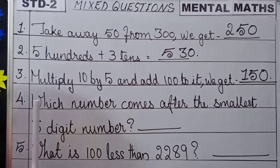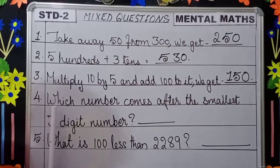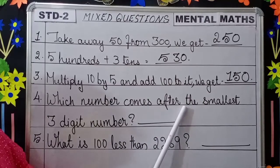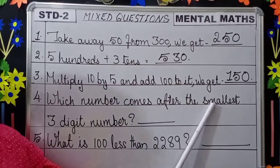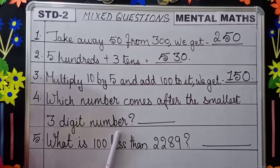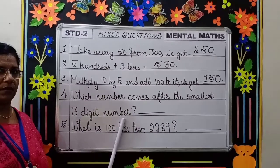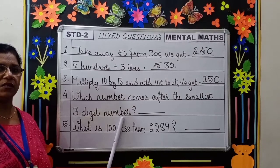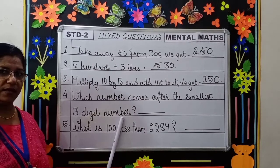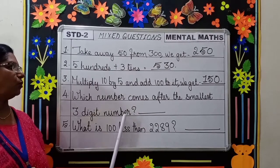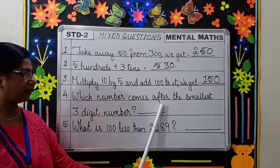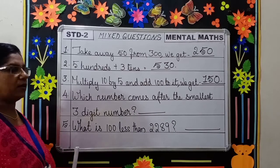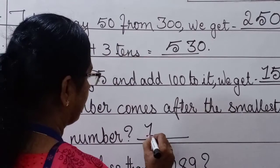Moving to the next question. Which number comes after the smallest three-digit number? Do you know which is the smallest three-digit number, children? It is 100. Now after 100, the answer is 101.